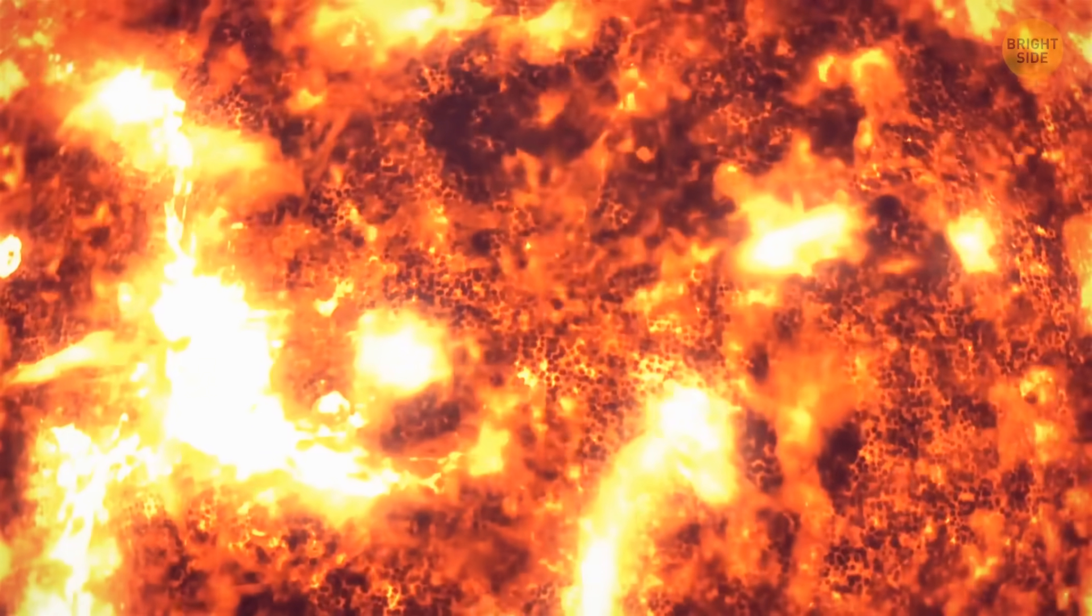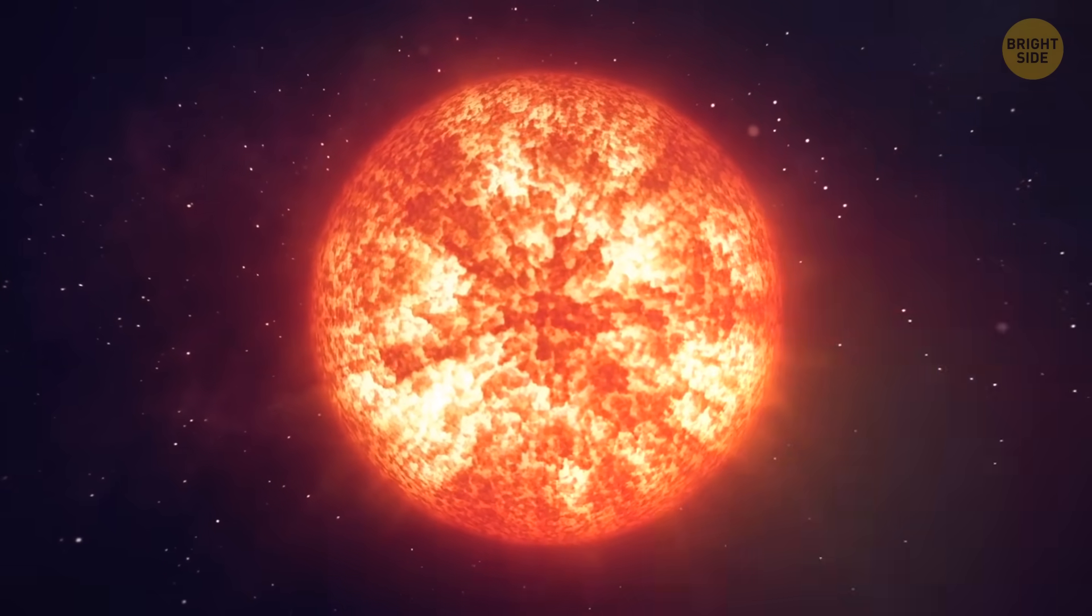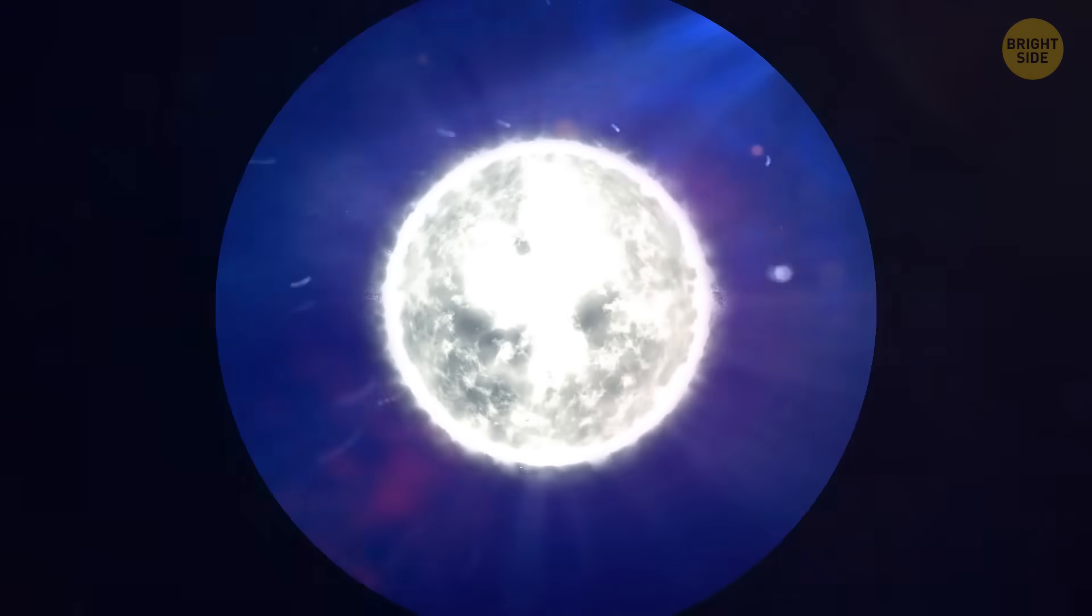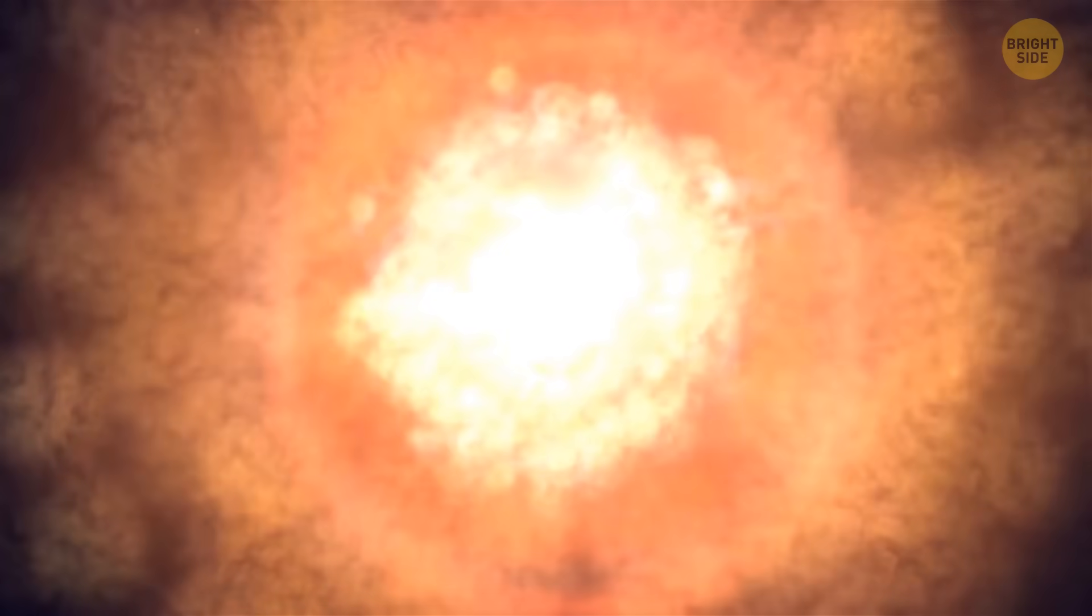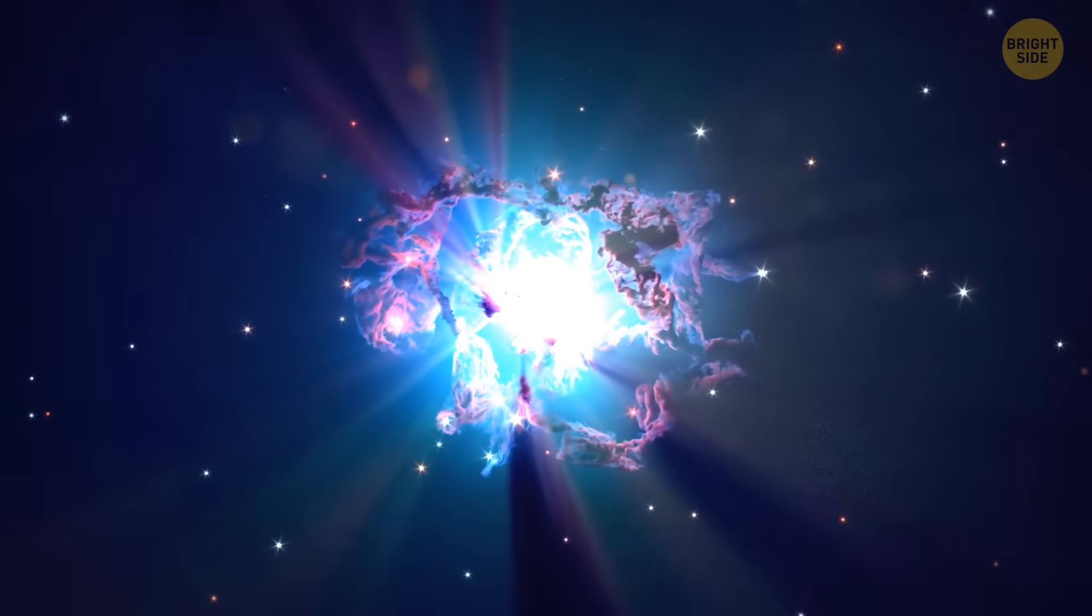It becomes a red giant after depleting the hydrogen in its core. It starts expanding and leaves its material, mostly hydrogen, on the white dwarf. If that's us, when the matter reaches high enough temperatures and pressures, nuclear fusion happens. We become a nova. Yay, we're a star again.